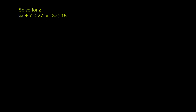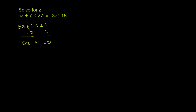Looking at the first inequality: 5z plus 7 is less than 27. Let's isolate the z's on the left-hand side by subtracting 7 from both sides to get rid of the 7. So 5z plus 7 minus 7 — those cancel out — giving us 5z is less than 27 minus 7, which is 20. Now we divide both sides by 5. We don't have to swap the inequality because we're dividing by a positive number. So z is less than 20 over 5, which means z is less than 4.